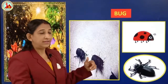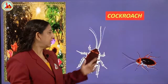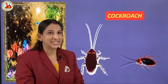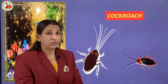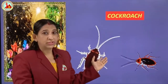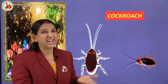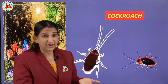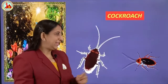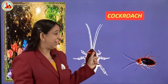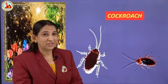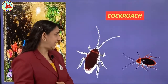Next is cockroach. You must often be seeing it in your kitchen, on the food where the food is open. This is cockroach, and it spreads disease. In the toilets also you must be seeing this cockroach. Which is this insect? Cockroach. Repeat after me — cockroach.